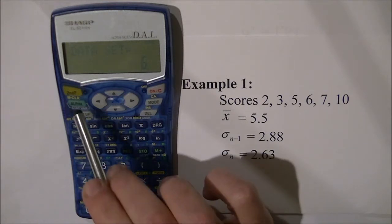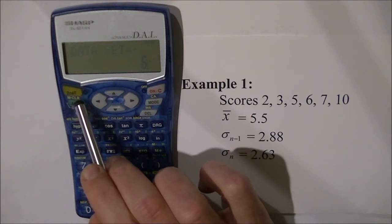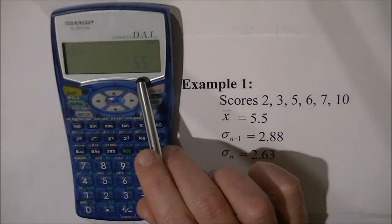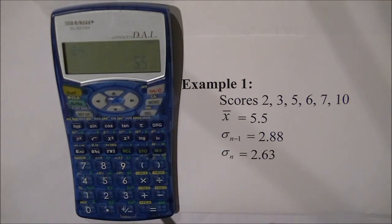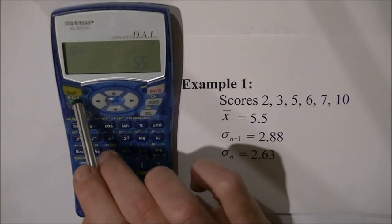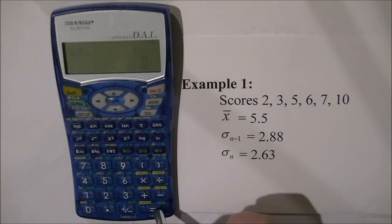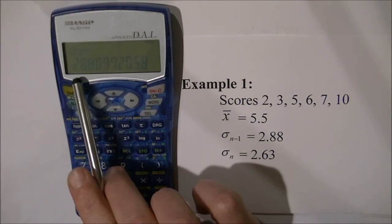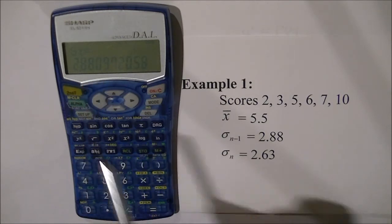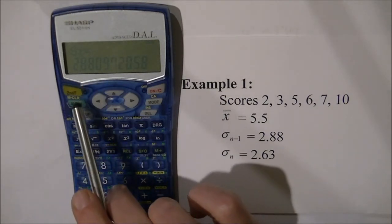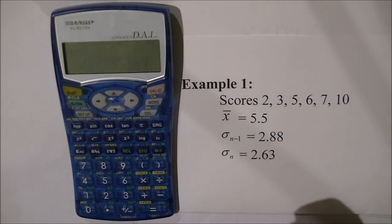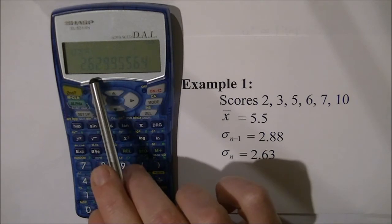So to find the mean we're going to press alpha and then 4 equals and we get the mean of 5.5. For the sample standard deviation we press alpha and then 5 equals and we get the sample standard deviation of 2.88. And then for the population standard deviation we press alpha and then 6 equals and we get 2.63.